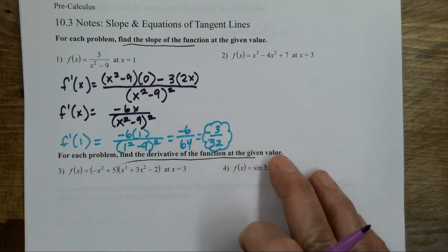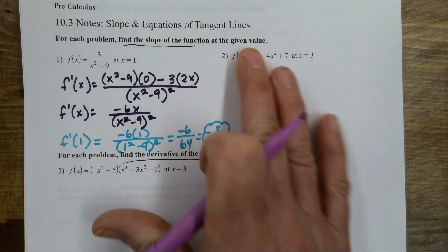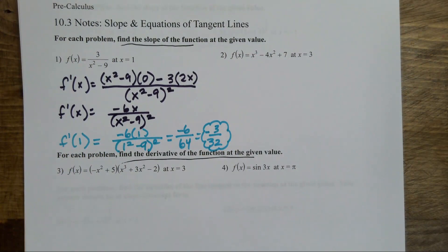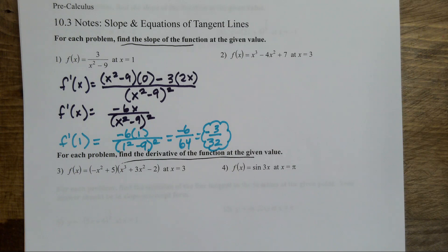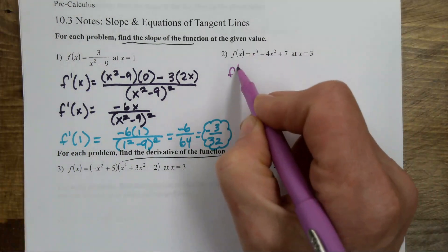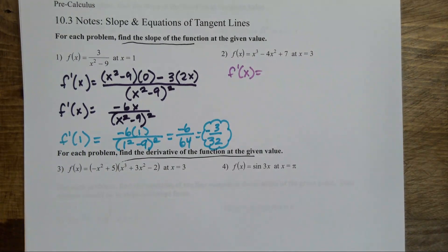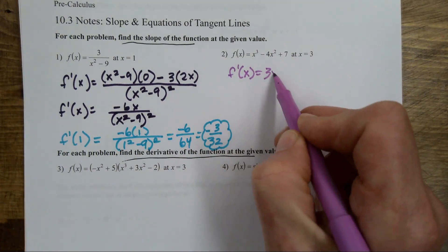Same thing on the next one: find the slope of the function at the given value. Unless I hear 'average rate of change' — in which case I'd be doing the actual slope, y2 minus y1 over x2 minus x1 — anytime I hear 'slope' in this chapter I am going to be doing the derivative. The derivative is the slope of the tangent. This is a basic power rule.